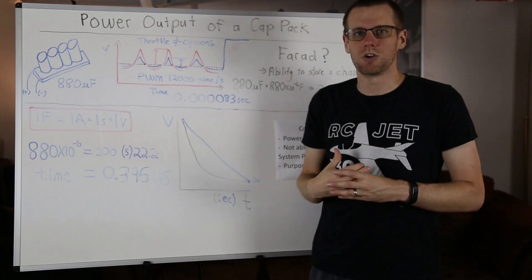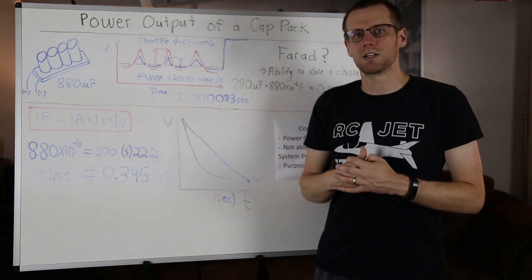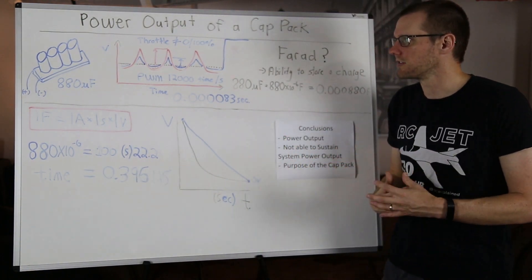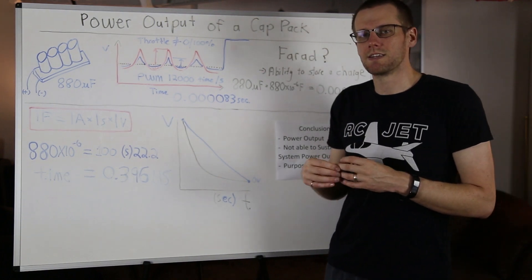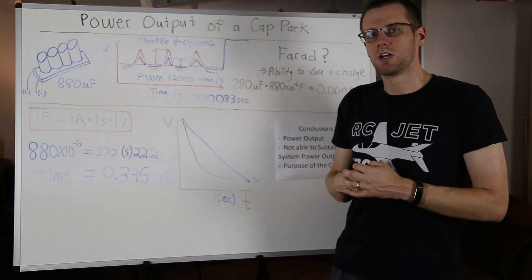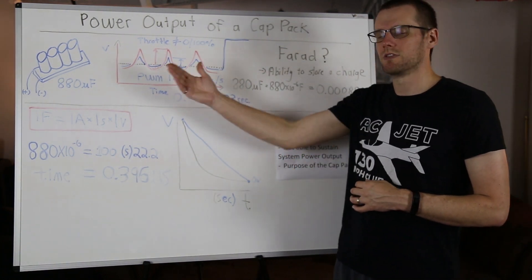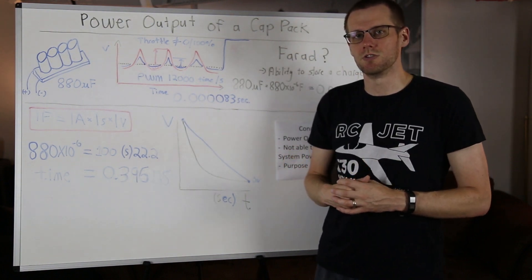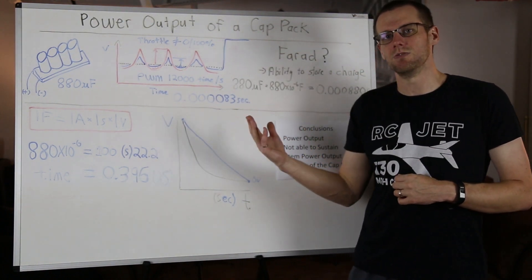And that's what we're looking for when we install these capacitor banks into our radio controlled models. Any model that demands a high amount of power could warrant the use of one of these capacitor banks in order to reduce the amount of ripple voltage that you see.